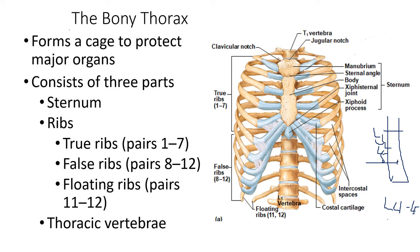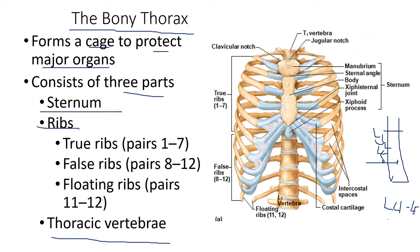The bony thorax forms a cage to protect the major organs. It consists of three parts: the sternum, ribs, and thoracic vertebrae. If you look at the first rib, it is connected to the first thoracic vertebra. We have 12 ribs — that is why we also have 12 thoracic vertebrae.